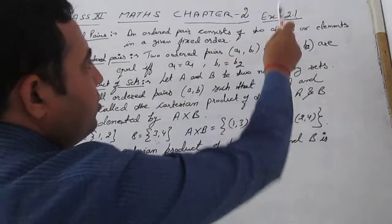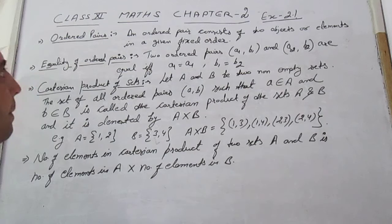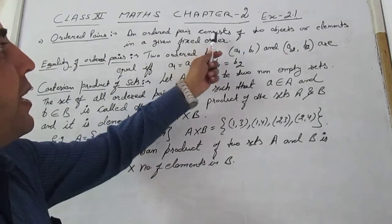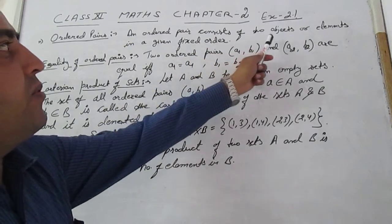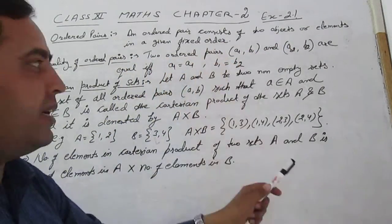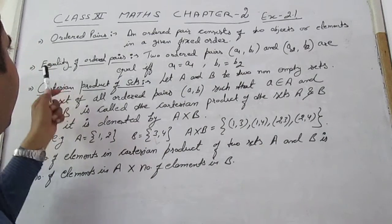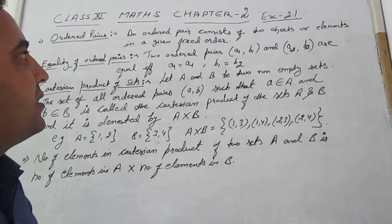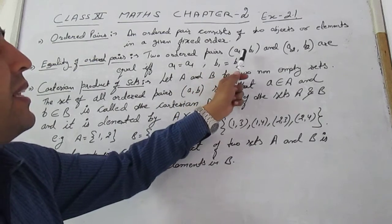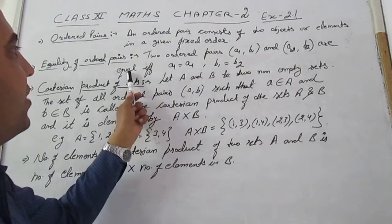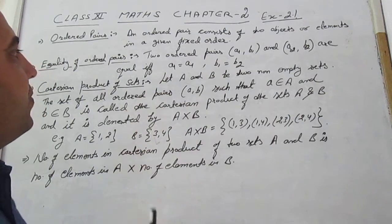Chapter 2, first definitions. An ordered pair consists of two objects or elements in a given fixed order. Equality of ordered pairs: two ordered pairs (a1, b1) and (a2, b2) are equal if and only if a1 equals a2 and b1 equals b2.